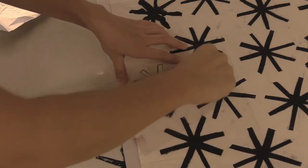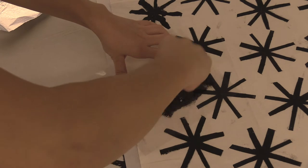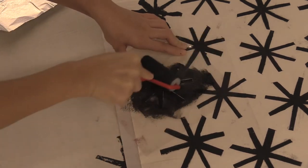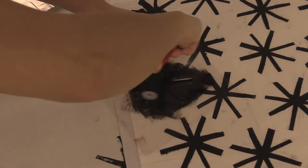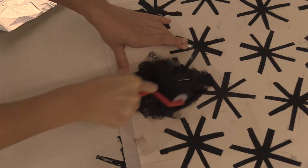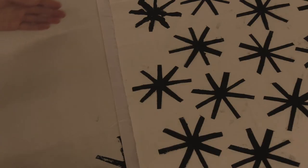Make sure to hold the stencil in place on top of your fabric. You could also use spray adhesive to help keep it in position. Then roll a light layer of paint onto the stencil as you hold it in place.